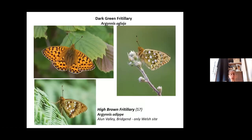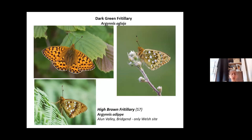The dark green fritillary and the high brown fritillary are almost impossible to tell apart unless you can see their undersides. The dark green fritillary is actually quite widespread, but so fast-flying that it's probably under-recorded. They both have similar orange upper wings with spots. The dark green fritillary does look very greenish on its underside when it stops — that's the only way to really distinguish it from the high brown fritillary.